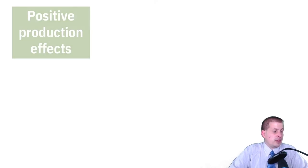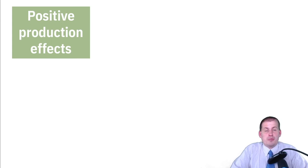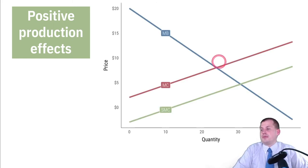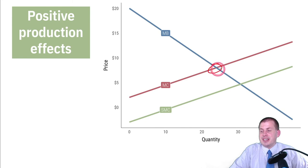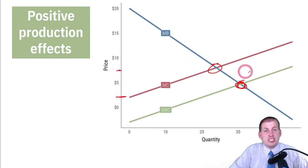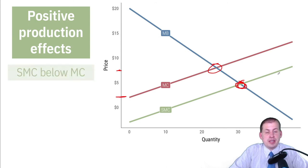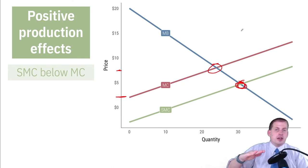We can graph all of these situations using supply and demand curves. For positive production externalities — where producers or factories cause positive outcomes — there's some marginal cost and marginal benefit showing what society is producing now, where those two curves cross. But because they're producing good things and helping society, it actually makes society better off, meaning ideally there should be more of it at a cheaper price — say $4 instead of $8. In this situation, the social marginal cost is below the marginal cost line. If the externality is positive, the social marginal cost is below.